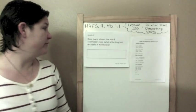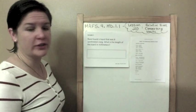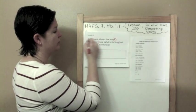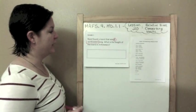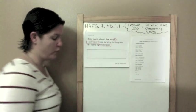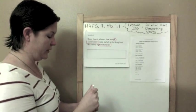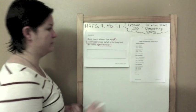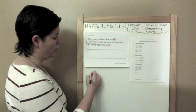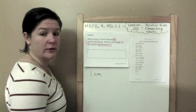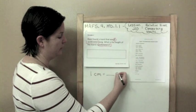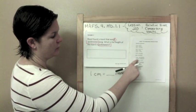So example one, we have that Reed found a lizard that was 8 cm long. What is the length of the lizard in millimeters? Alright, so what we are doing is we are converting centimeters to millimeters. So we have 8 cm. If 1 cm equals how many millimeters? Let's go over here.